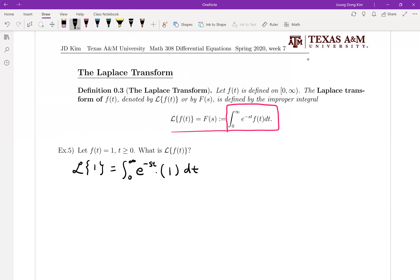Then this one is equal to, this is really easy, right? Just like exponential function. So by the definition of improper integral, it's from 0 to a, e to the minus st dt, and we're going to send your a to infinity.